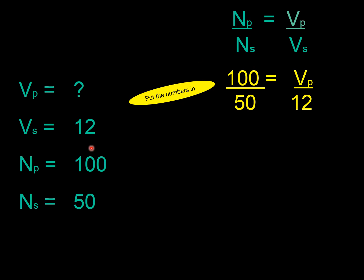Okay, NP. NP is 100. So, we'll put 100 in. NS, that's 50. So, I'll put 50 in. VP, we don't know. That's what we don't know. And VS is 12. So, I've put all the numbers in. Best thing always, tidy up a bit. 100 divided by 50 is 2. So, that's the same thing. I've just tidied this up. It looks a little bit less intimidating.